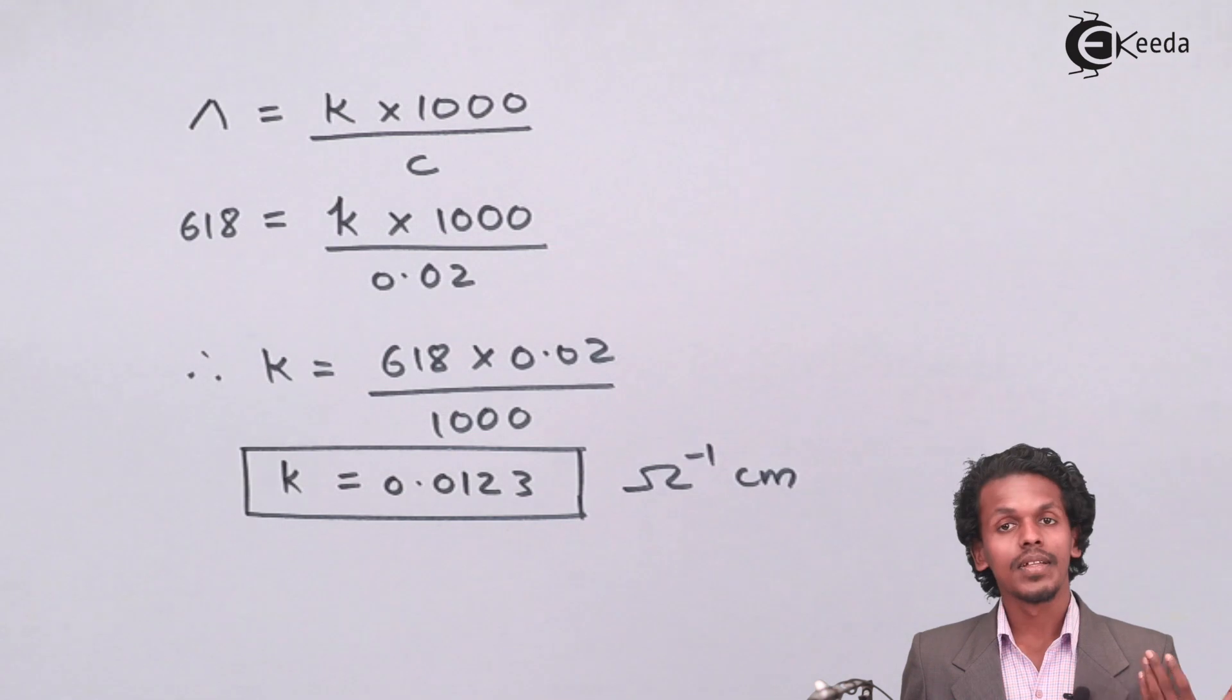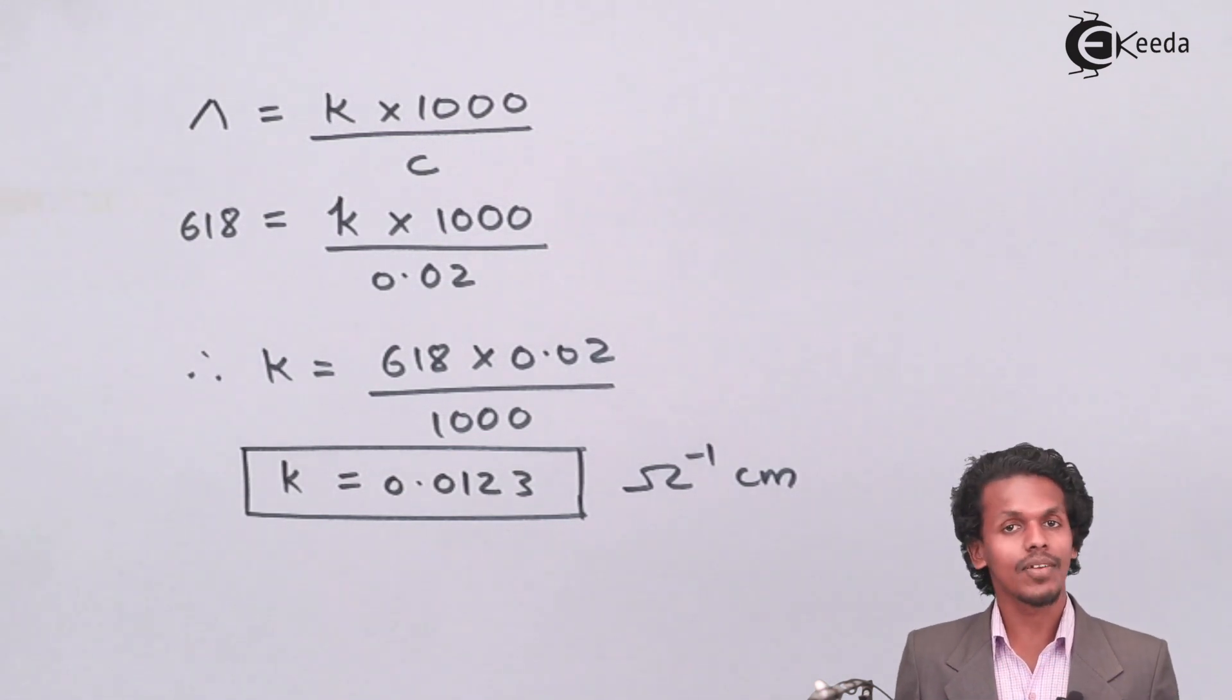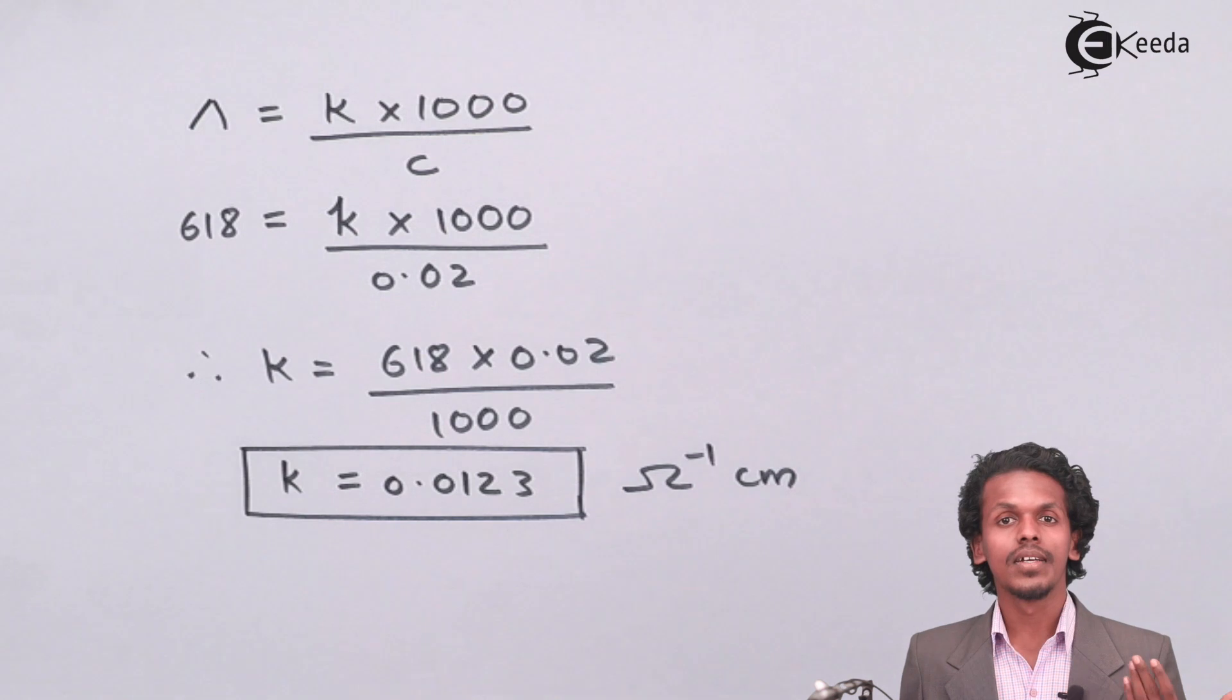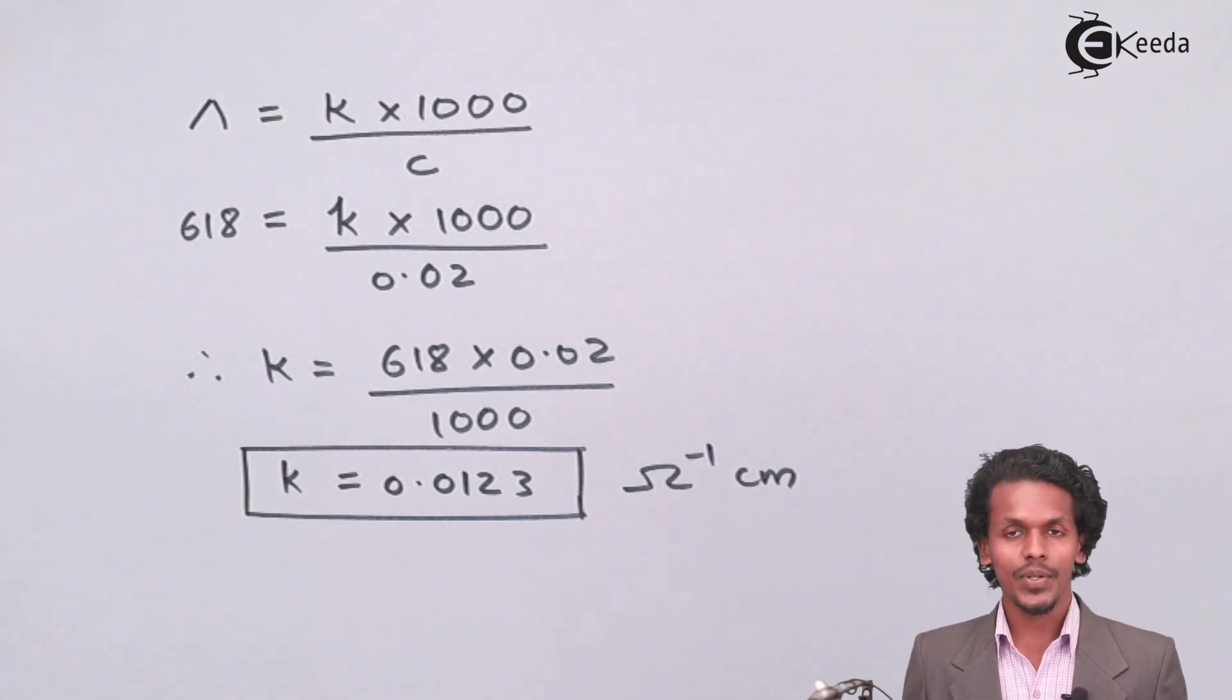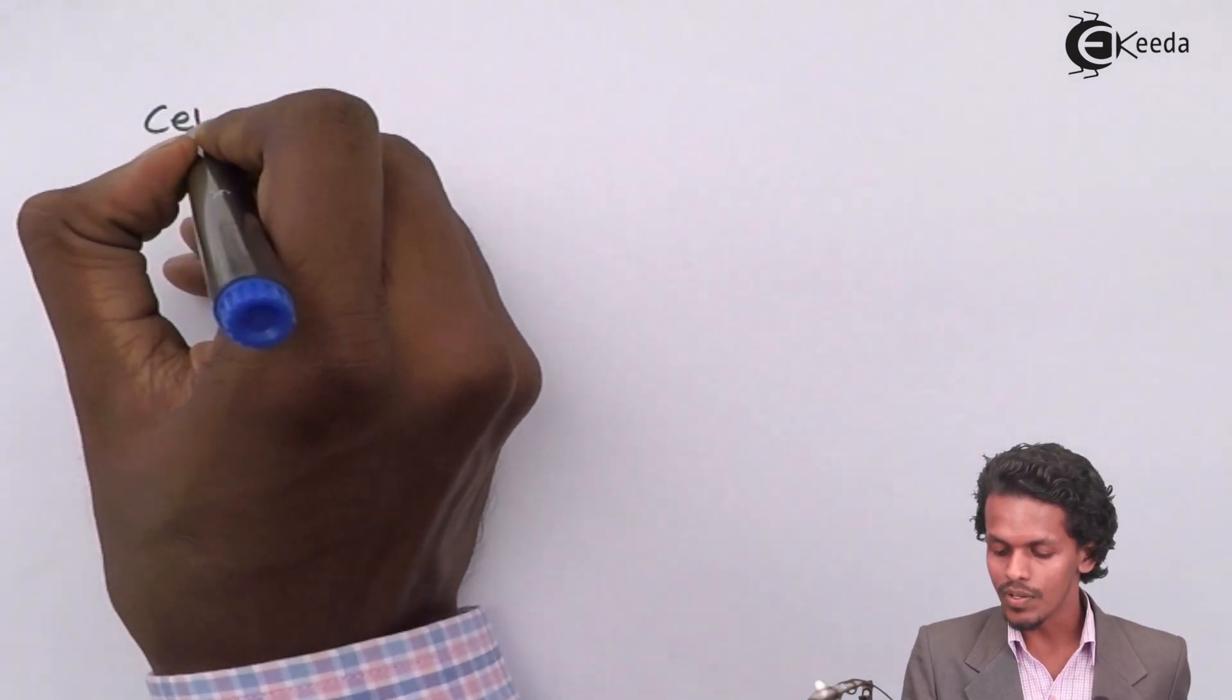By the help of this, we can estimate what would be the value of the cell constant. We know that cell constant b equals k times R.